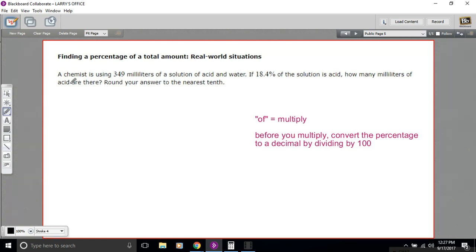Let's read what we've got here. It says a chemist is using 349 milliliters of a solution of acid and water. So that's the total. It's 349 milliliters.